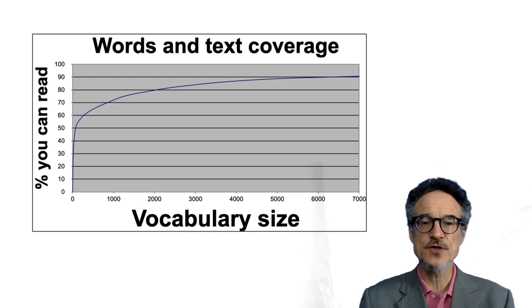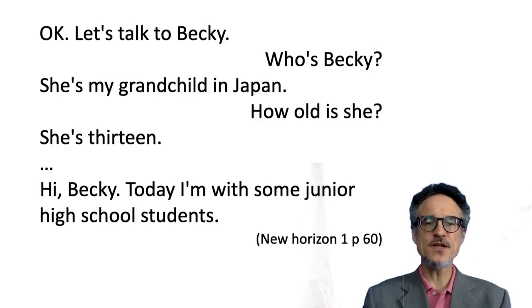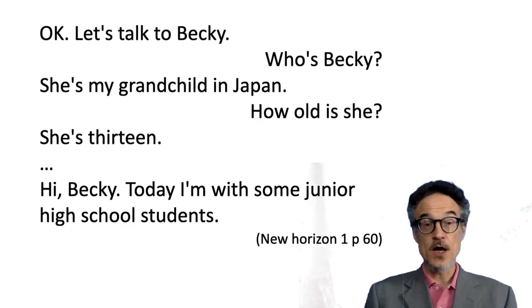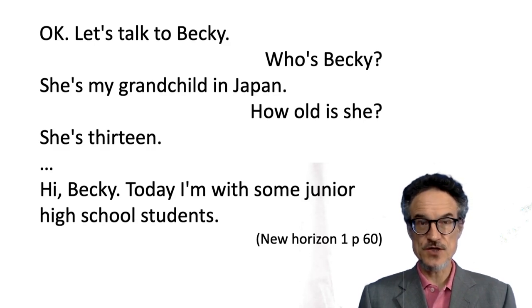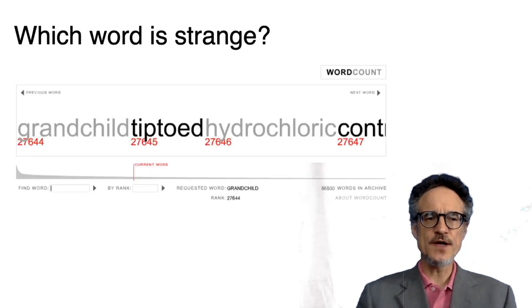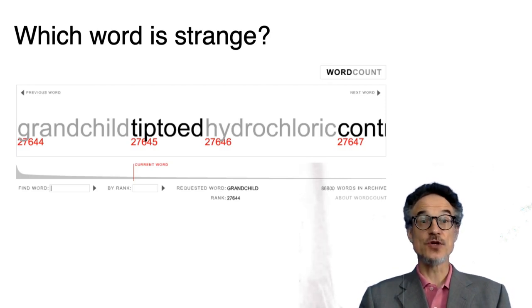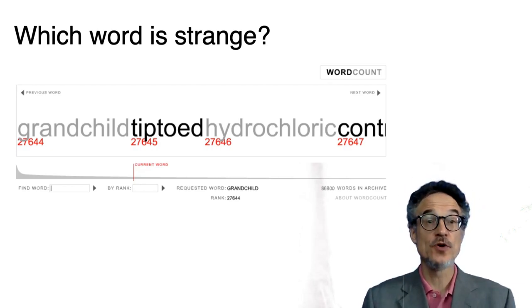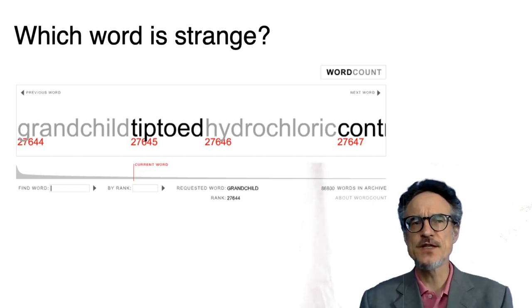So, just to digress to junior high school, this is a junior high school textbook. Now, junior high school first year is when many students in Japan start studying English. There's one word on this page that is a bit strange for some students who've been learning English for a few weeks or a few months. And the strange word is grandchild. And if we look on word count, grandchild is the 27,644th most common word in English.